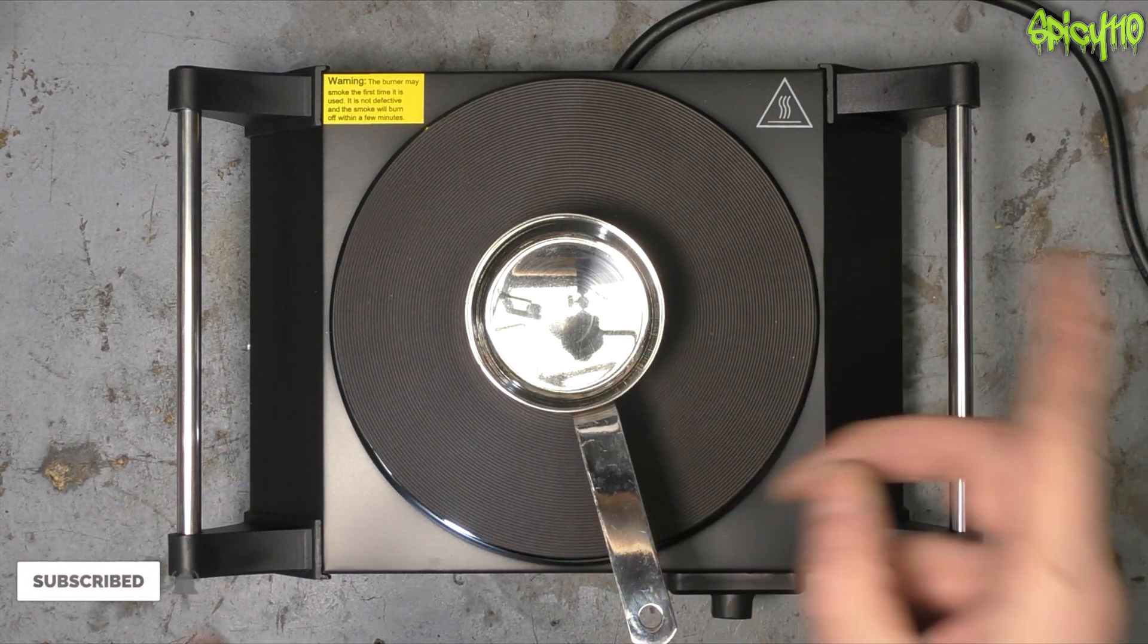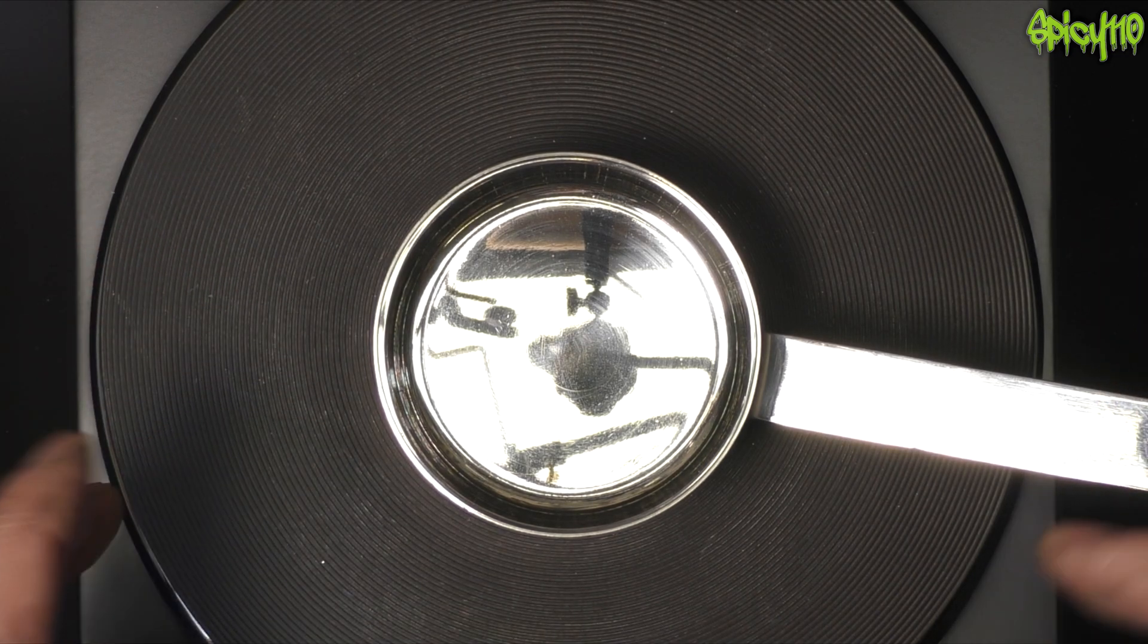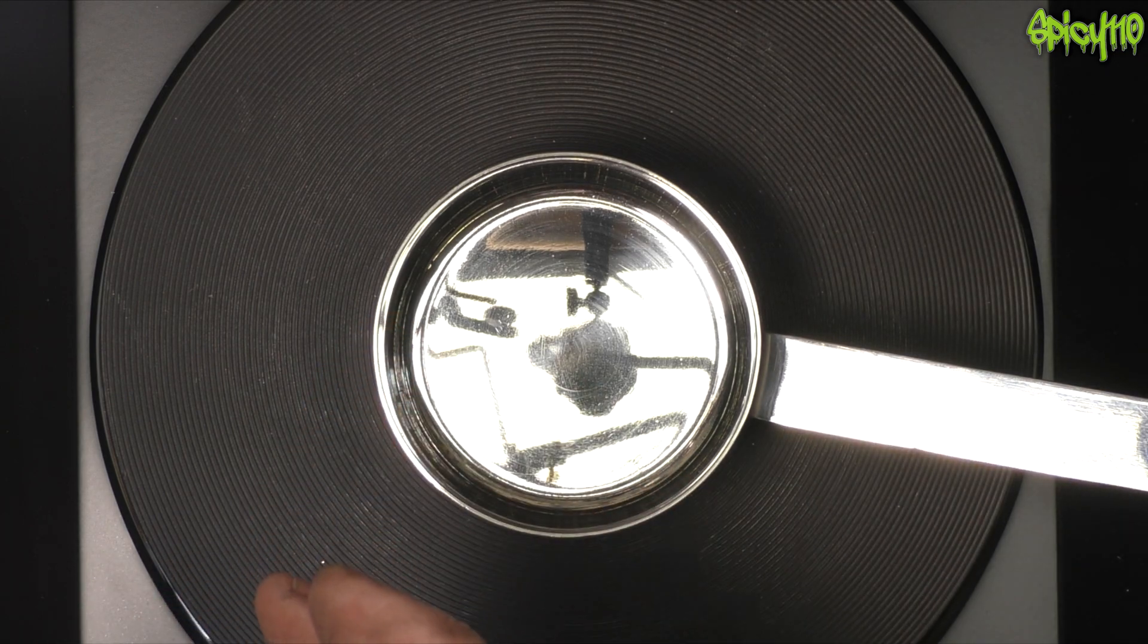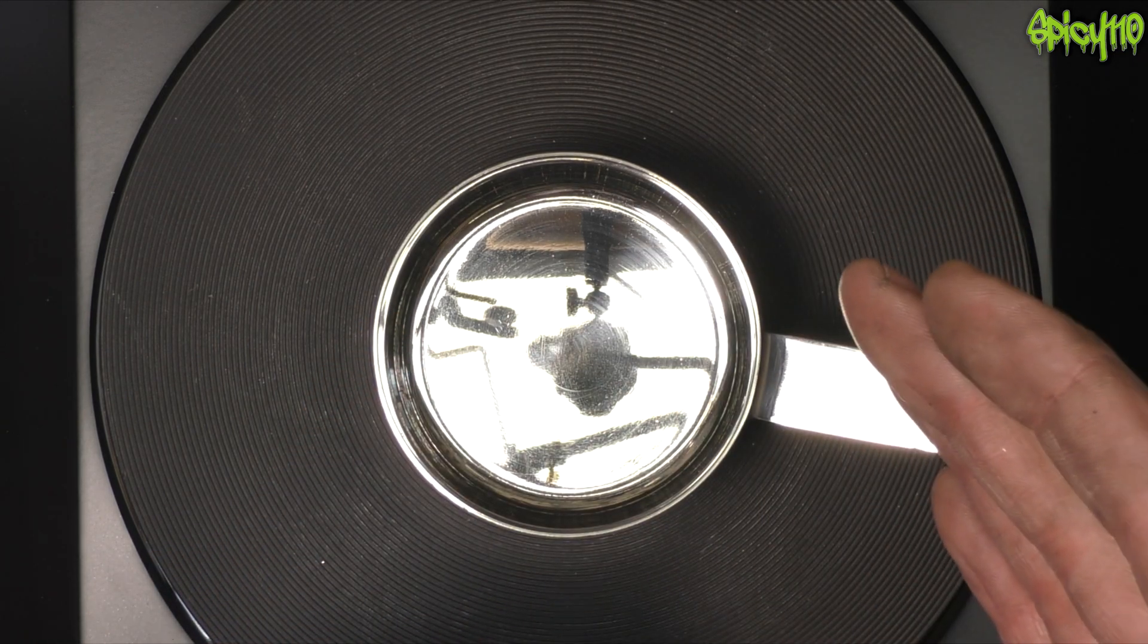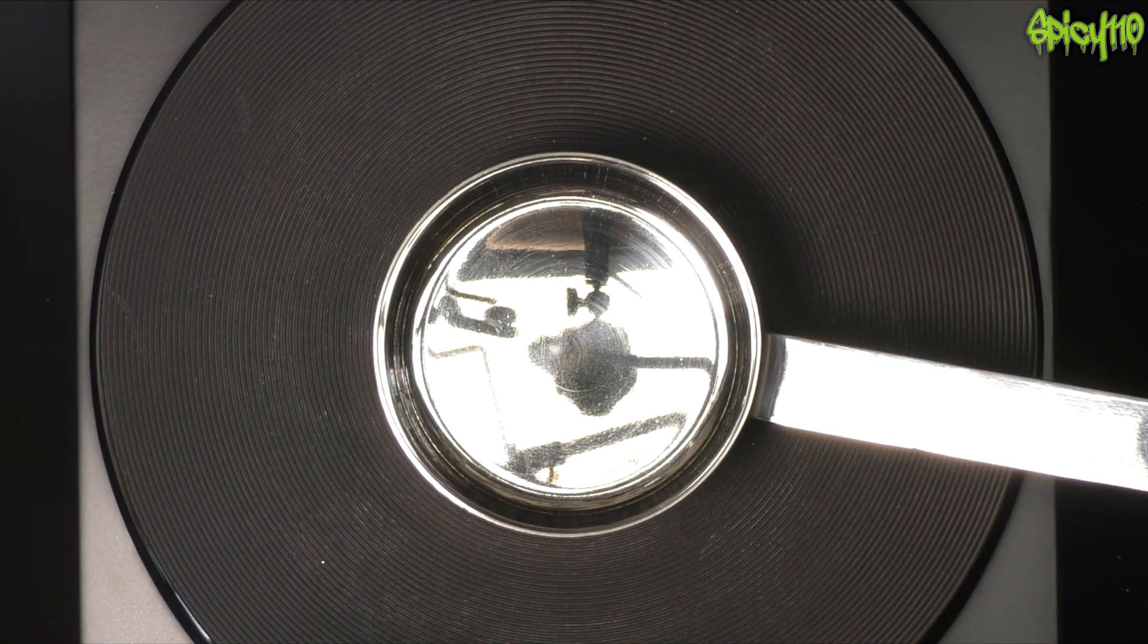The reason why the electric hot plates are particularly good for this is because what you want to do is slow down the transition between the metal being a liquid and then it becoming a solid. It's during that transition back that it crystallizes and turns into crystals.